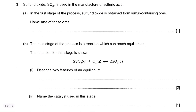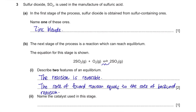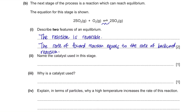Question 3. Sulfur dioxide, SO₂, is used in the manufacture of sulfuric acid. Part a. In the first stage, sulfur dioxide is obtained from sulfur-containing ores — one of these ores is zinc blende. In the next step, the reaction 2SO₂ + O₂ ⇌ 2SO₃ can reach equilibrium. Two features of an equilibrium are: the reaction is reversible, and the rate of the forward reaction equals the rate of the reverse reaction. The catalyst used in this stage is vanadium oxide.